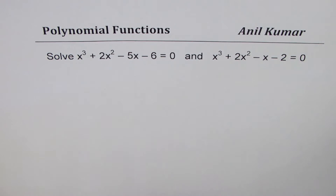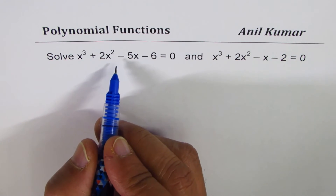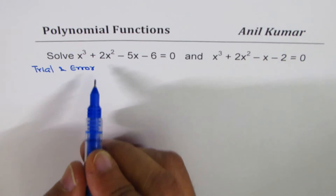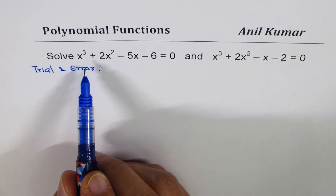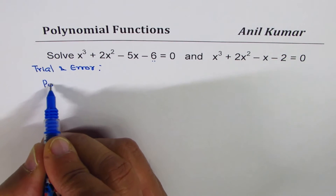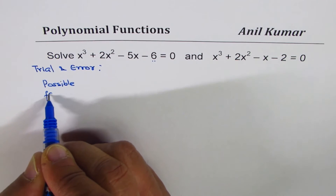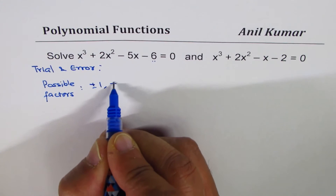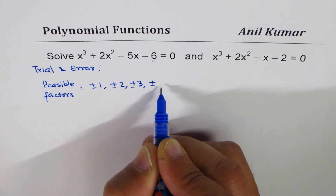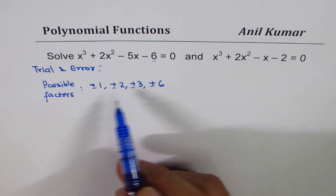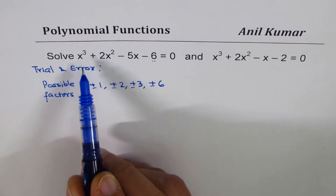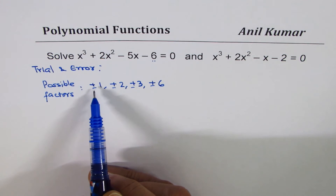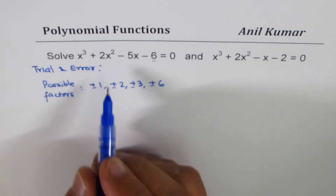To begin, we try to find factors by trial and error. The assumption is that the factor must be a factor of 6, so we check possible factors: ±1, ±2, ±3, or ±6. When we say these are possible factors, it means if substituting that value gives 0, then it is a factor; otherwise it is not.